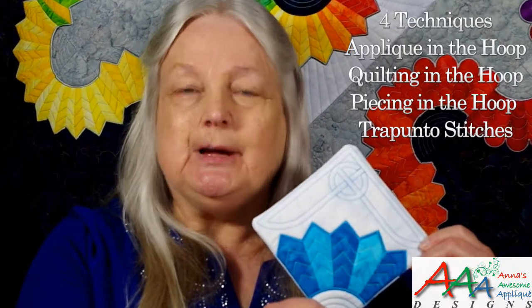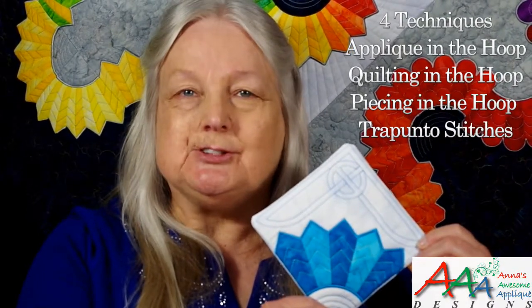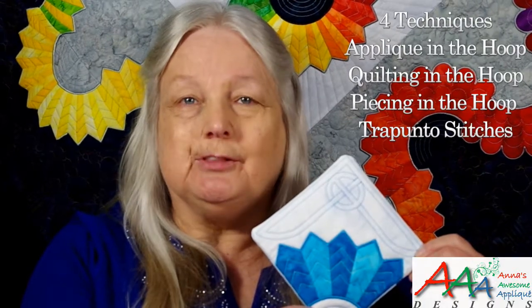In this, you're going to learn four different techniques. You're going to have applique in the hoop, quilting in the hoop, piecing in the hoop, and adding trapunto stitches. I'm so excited to show you how this works and how quick and easy it is all doing it on the embroidery machine. I'm going to show you exactly how to do that in the rest of the video, and thank you so much for watching.